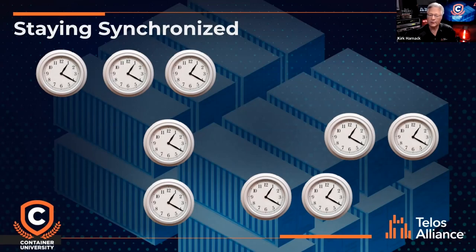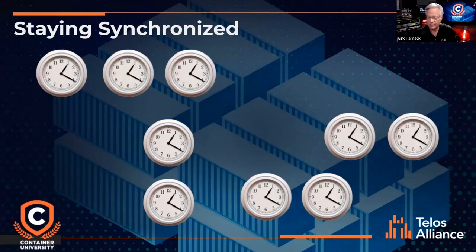TV stations once used Genlock, or house sync, running over a separate and extensive cabling network to keep all the cameras, switchers, and videotape machines in time with each other. Likewise, digital media networks such as audio over IP need all of their devices synced to a single master clock.